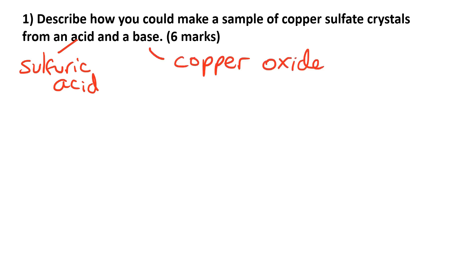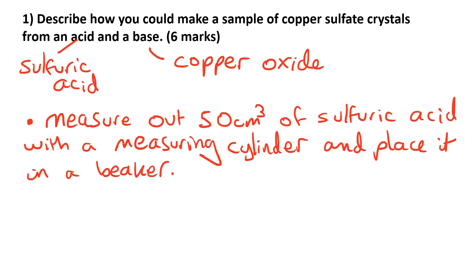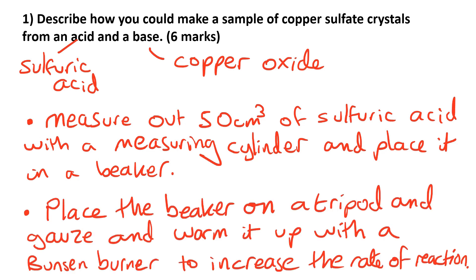Once we know that we can start describing our practical, mentioning the equipment that we're using along the way. So we could say: measure out 50 cm³ of sulfuric acid with a measuring cylinder and place it in a beaker. You could use a different volume such as 25 cm³ or 30 cm³, so long as you can measure it with a measuring cylinder. Then place the beaker on a tripod and gauze and warm it up with a Bunsen burner to increase the rate of reaction.